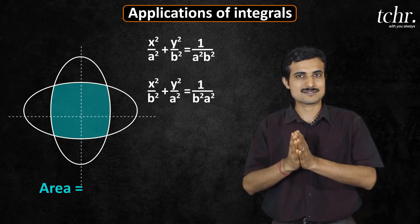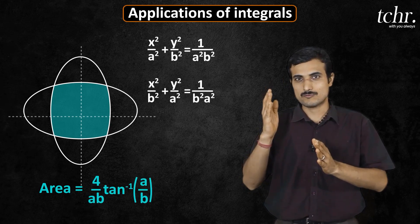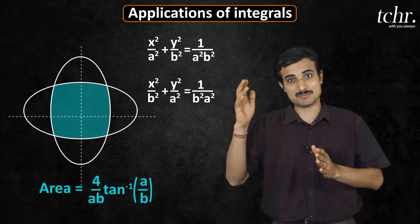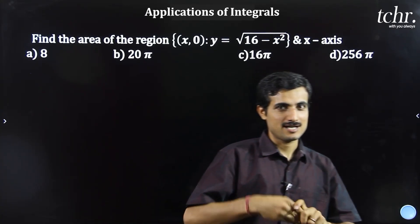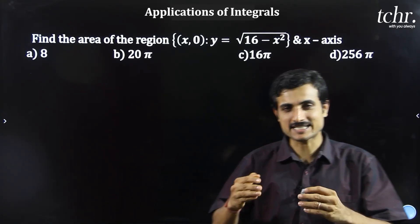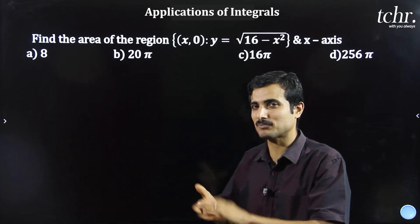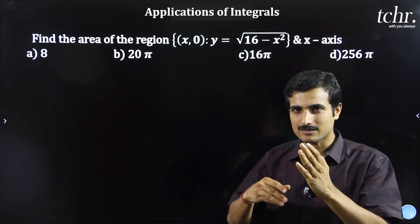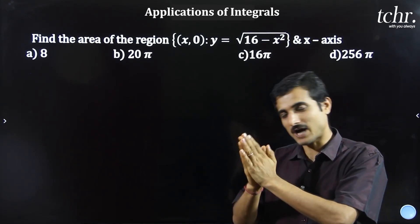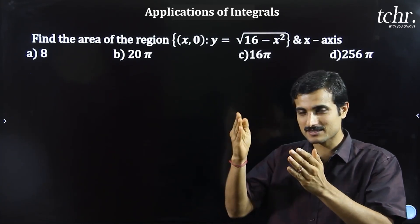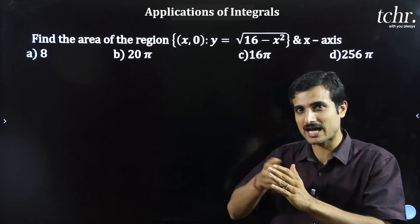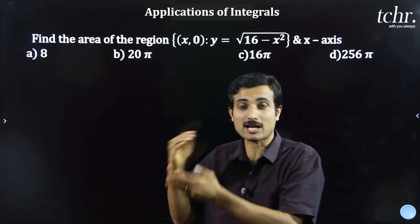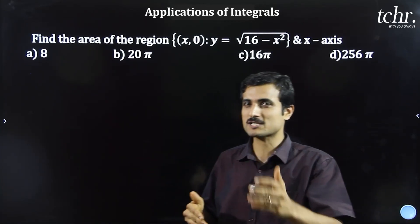Answer is 4 by a b into tan inverse a by b. Integration, area under the curve. Question 1 to 2, what do you expect? Area under the curve, ellipse area, circle and straight line, ellipse and straight line, parabola and straight line. These are the most expected concepts.